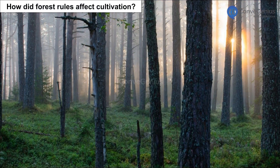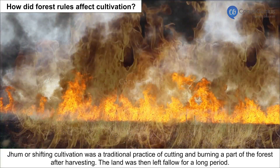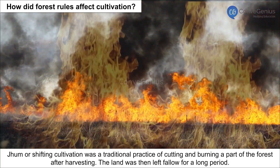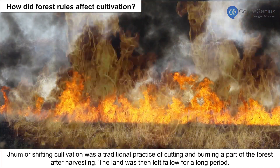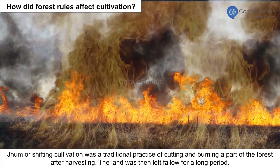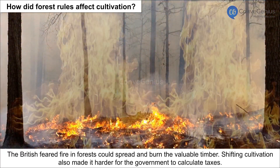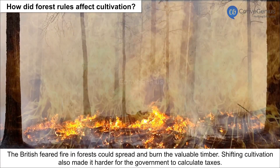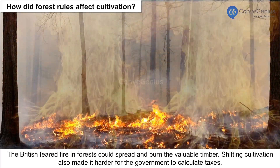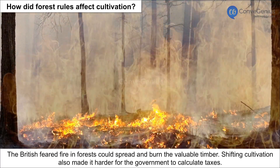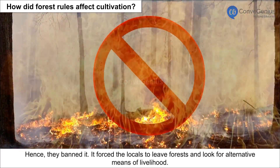How did the forest rules affect cultivation? Jhoom, or shifting cultivation, was a traditional practice of cutting and burning a part of the forest after harvesting, leaving the land fallow for a long period. The British feared fire in forests could spread and burn valuable timber. Shifting cultivation also made it harder for the government to calculate taxes. Hence, they banned it.